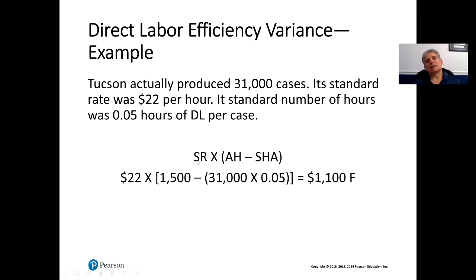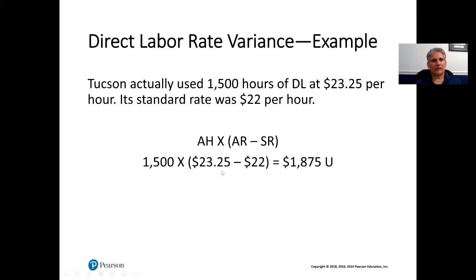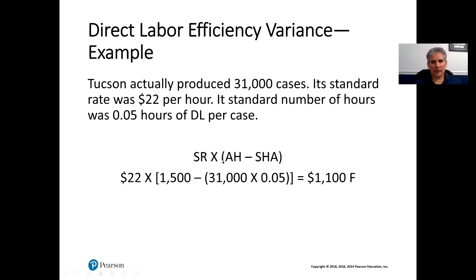The efficiency variance is based upon how many actual hours were used compared to what we were anticipating — the standard hours allowed. Tucson actually used 1,500 hours, so those are the actual hours. We're going to subtract from that the standard hours allowed, which is what we're expecting.